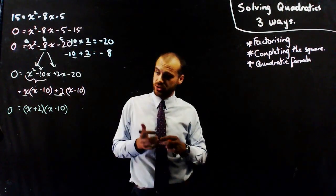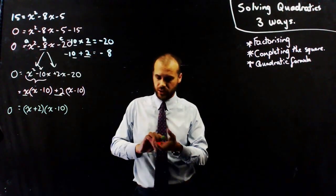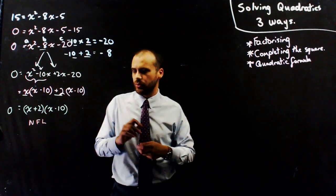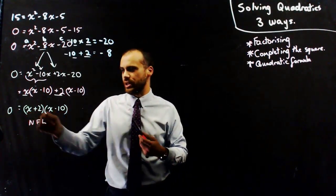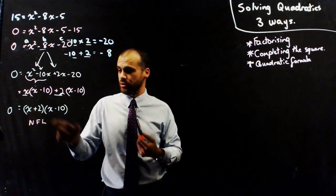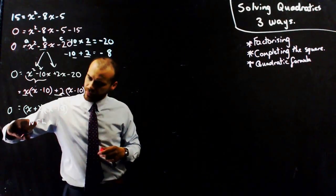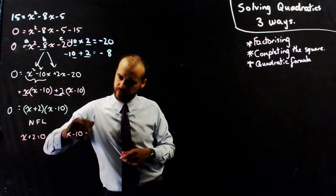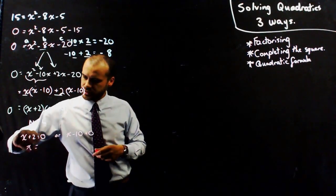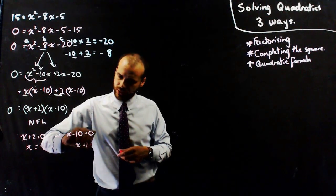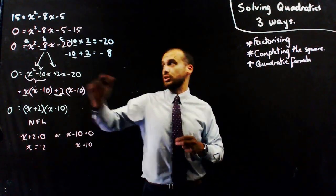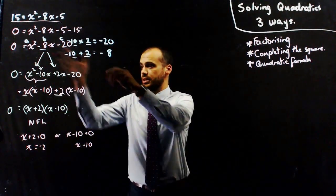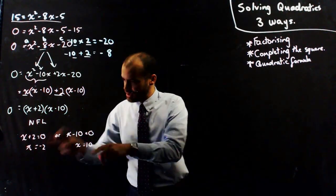So now I know that 0 equals x plus 2 times x minus 10. And now I can use something called the Null Factor Law, which says that if two things are multiplied together and the answer is 0, then one of them must be equal to 0. Therefore, x plus 2 equals 0 or x minus 10 equals 0. Therefore, x is equal to negative 2, or x is equal to positive 10. I've solved this quadratic by making it equal to 0, using the AC method to factorise it, and then using the Null Factor Law to find two answers.